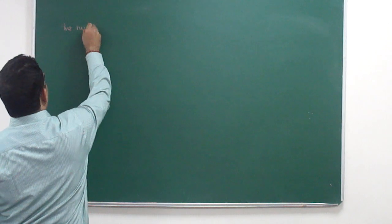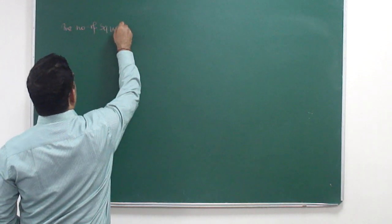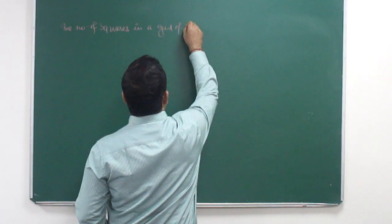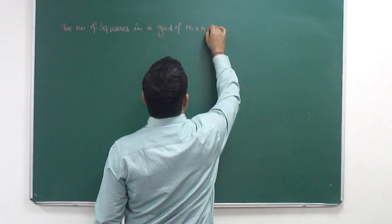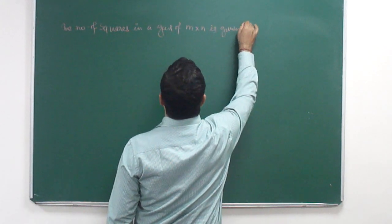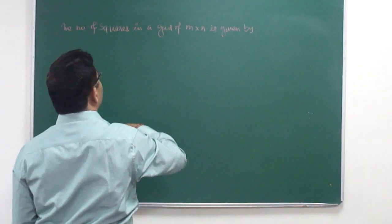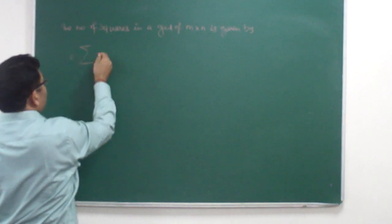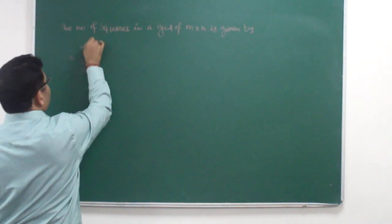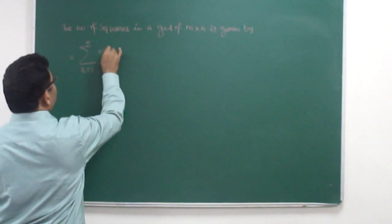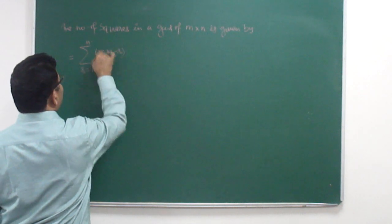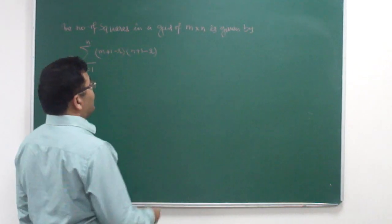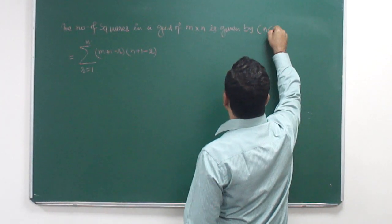The number of squares in a grid of m × n is given by the sigma summation where r goes from 1 to N of (M + 1 − r)(N + 1 − r), where r is 1 to N. Remember here N is less than M.